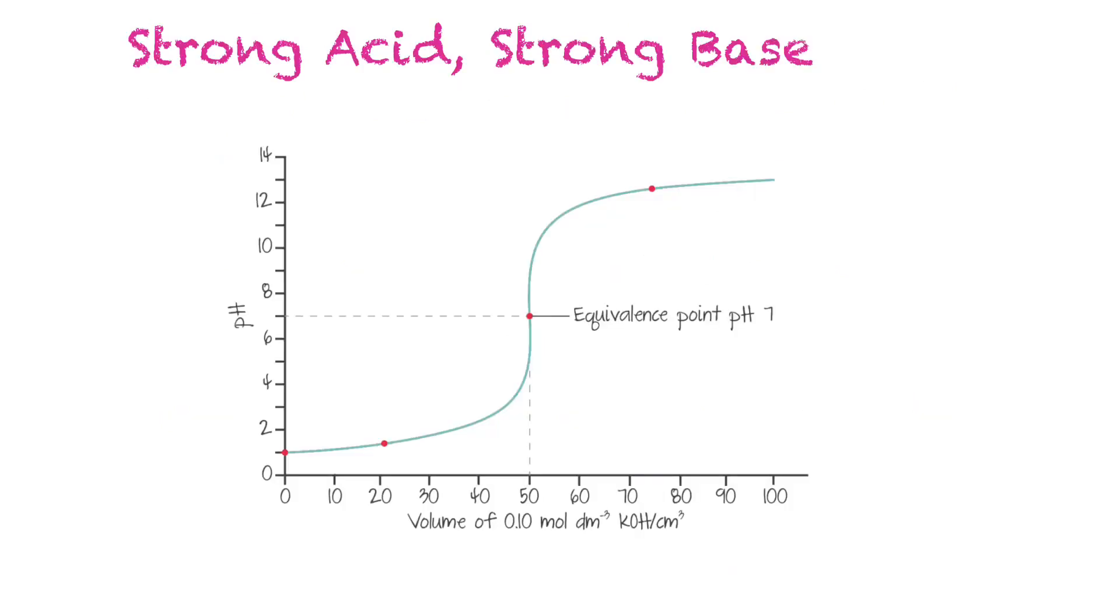Titration curves demonstrate the change in pH as you add more acid or base to a titration. In a titration with a strong acid and a strong base it will look like this. We have our acid solution, so it starts off around pH 1 because there's excess acid at this point. Then you keep adding base and eventually there's a sharp increase, and then it ends off around pH 13 when there's excess base.